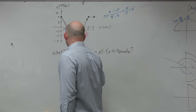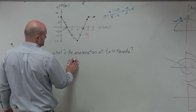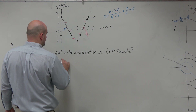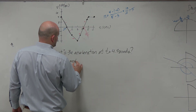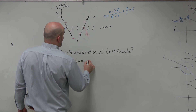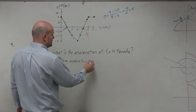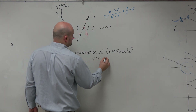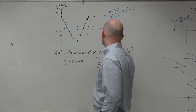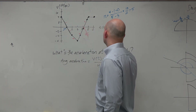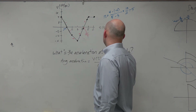Let's do the average acceleration. The average acceleration between the points — let's do between 3 and 5 — would be v sub 5 minus v sub 3, all over 5 minus 3.